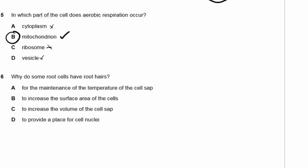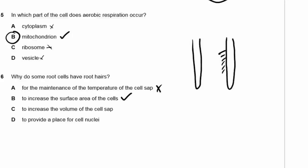Question 6: Why do some root cells have root hairs? Is it to maintain temperature, increase surface area, increase volume of cell sap, or provide a place for the cell nuclei? Root hairs increase the surface area — the root hairs make it possible to absorb through all those tiny surfaces. The answer is B.